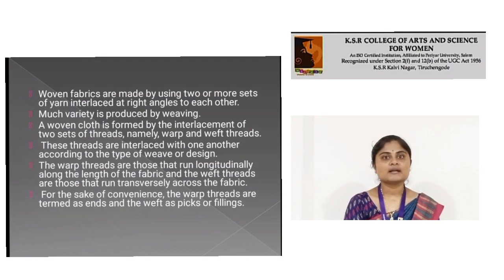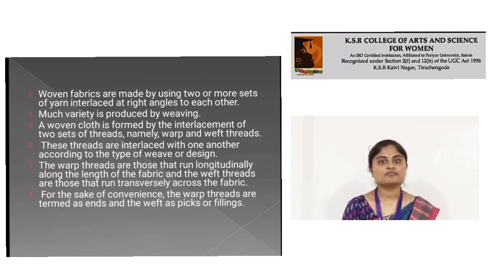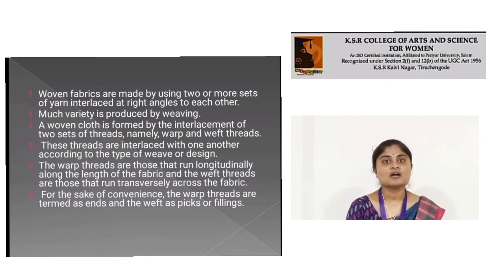Woven fabrics are made by two or more sets of yarn interlaced at right angles to each other. The woven process is formed by interlacement of threads, mainly warp and weft threads. These threads are interlaced with one another according to the type of weave or design. The warp threads run longitudinally along the length of the fabric, and weft threads run traversely across the fabric.